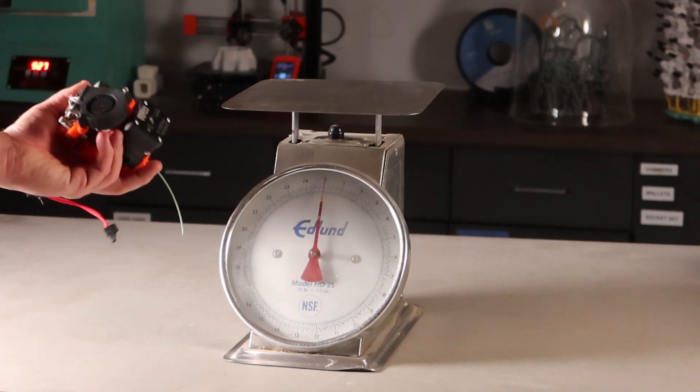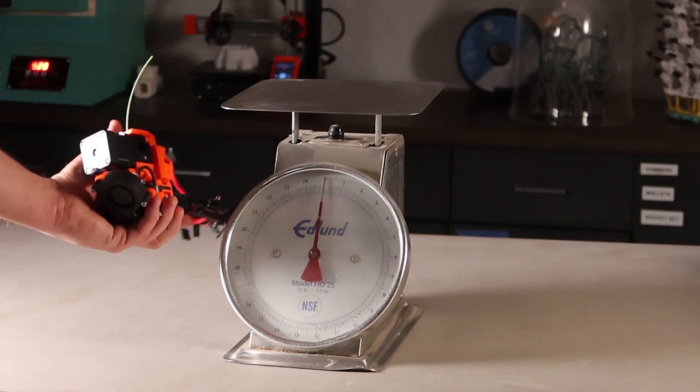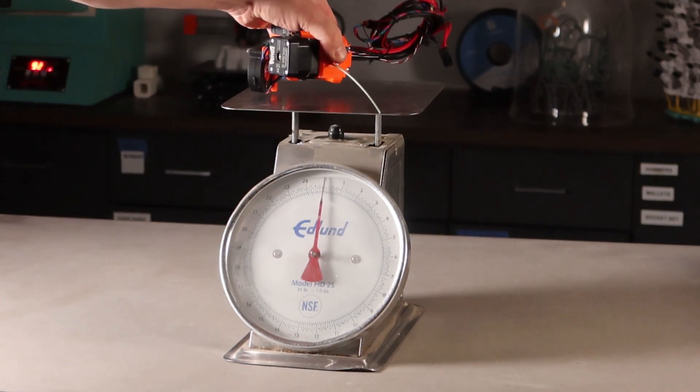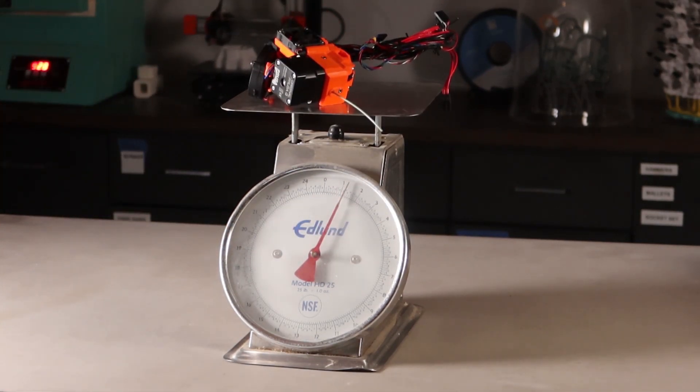So this is an extruder from a plastic printer, a Prusa Mark III. It's usually in this orientation. And if we put this on the scale and weigh it, we can see that it weighs one pound and four ounces.